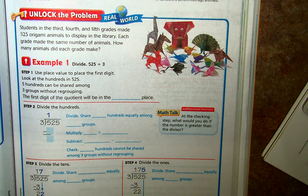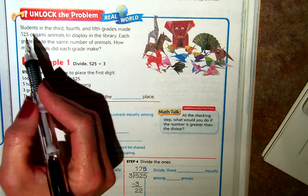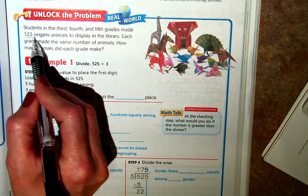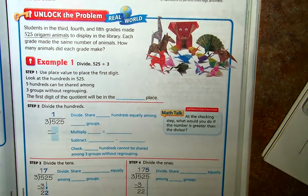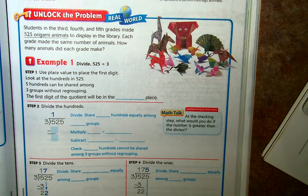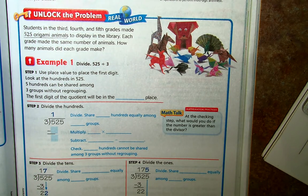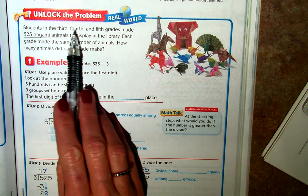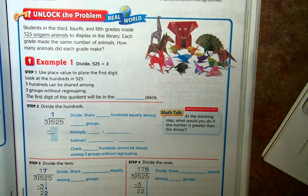So we know that the total number of origami animals is 525, and we know that they were displayed, made and displayed by third grade, fourth grade, and fifth grades, and so there are how many grades represented there?